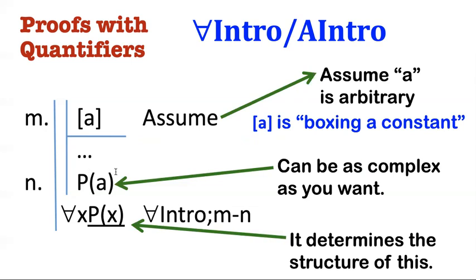And notice also this formula, this method, this rule doesn't just work for single properties like property P. This can be any complex formula, like a has property P, and it has property Q, and it has property R. However complex this is, that structure is going to determine exactly what goes here.